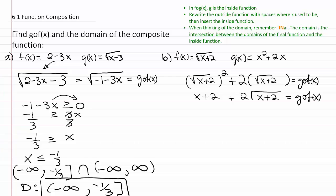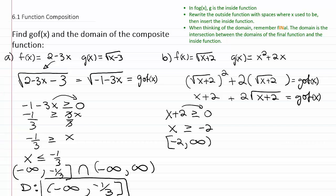Now we need to get the domain. We have a radical, and for radicals we need to be concerned about the expression underneath being negative — we don't want imaginary numbers. So we're going to say that x plus two under that radical must be greater than or equal to zero. That means x must be greater than or equal to negative two. So from negative two to infinity is the domain for the final function — you can put any of those numbers in without getting imaginary numbers or undefined points.